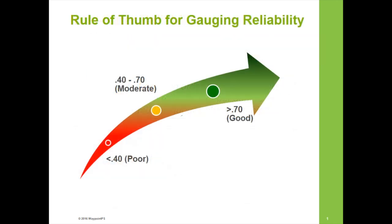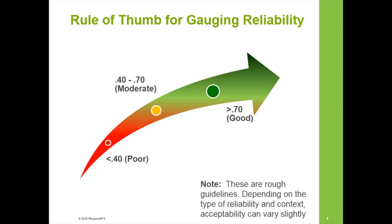Here's a quick overview of how we can gauge reliability. Less than 0.4 is considered poor reliability, between 0.4 and 0.7 is moderate, and anything greater than 0.7 is considered good. It's important to keep in mind that these are rough guidelines — depending on the type of reliability and the context, what is acceptable can vary.